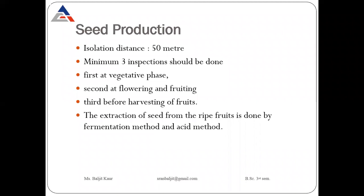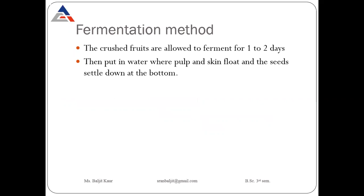Seeds of tomato are extracted from the ripe fruits and extraction of seed can be done by two methods: fermentation method and acid method. In the fermentation method, fruits are harvested and then crushed, and kept to ferment for about one to two days.